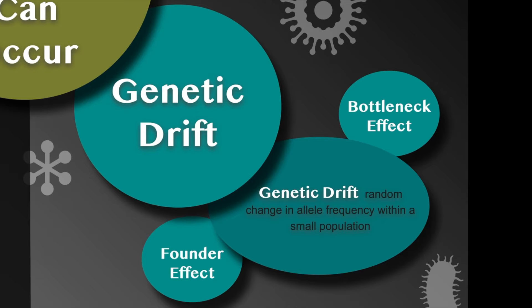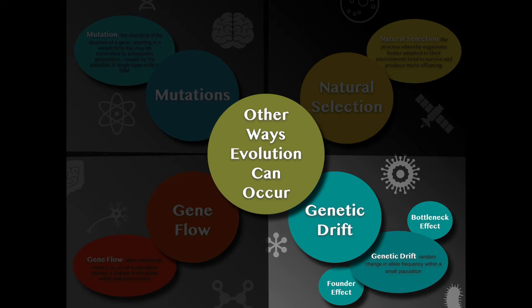Genetic drift randomly affects allele frequencies within the population. Gene flow and genetic drift — including the bottleneck and founder effect — are more random events. Mutations can also be considered random. When we talk about speciation, mutations, gene flow, and genetic drift are random events that allow species to evolve.